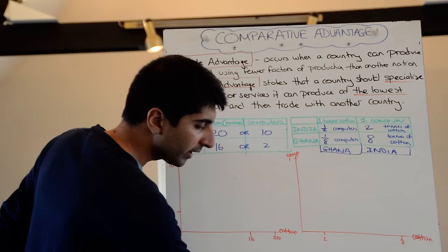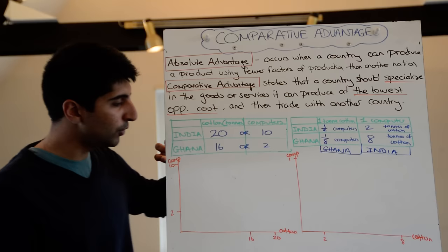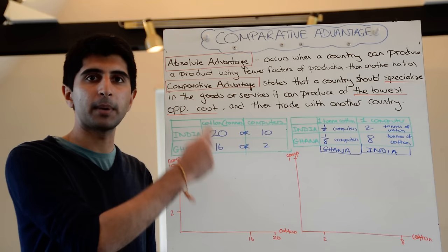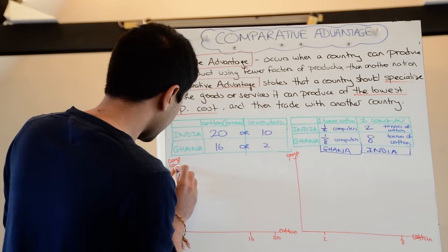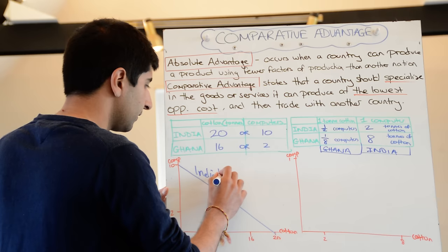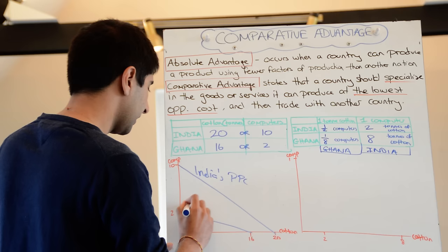In your exam you might have to draw a trading PPC — very simple, you've done them before in micro. We've got computers on the y-axis, cotton on the x-axis. For India, using the same factors of production, they can produce either 20 tonnes of cotton or 10 computers — plot the two points and we get India's trading PPC. For Ghana, it's either 16 tonnes of cotton or 2 computers — plot the two points together and we get Ghana's PPC.